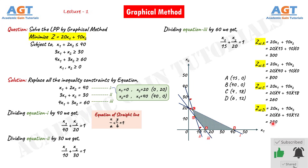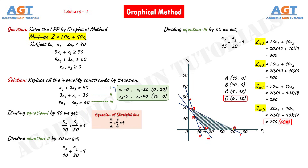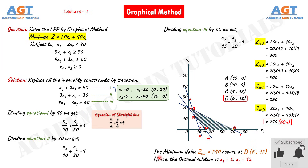Since we are asked to minimize z, we need the minimum value of z. Among the four values 300, 800, 260, and 240, the lowest minimum value of z is 240. So our required z minimum is 240. The minimized z occurs at point D (6, 12), which is the optimal solution. Hence the optimal solution is x1 equals 6 and x2 equals 12, where z minimum is 240.